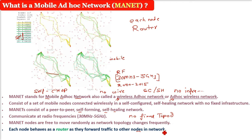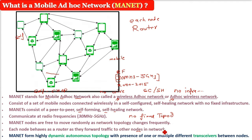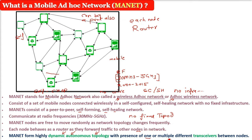MANETs may operate in a standalone fashion or they can be part of a larger internet. MANETs form a highly dynamic autonomous topology with the presence of one or multiple different transceivers — that is, transmitters and receivers — between the nodes.